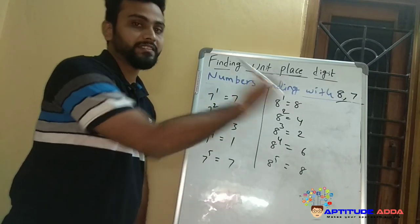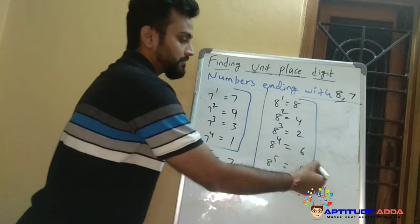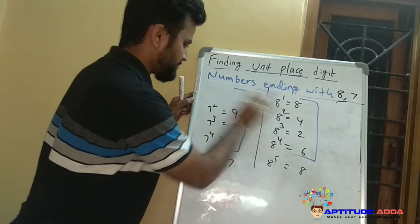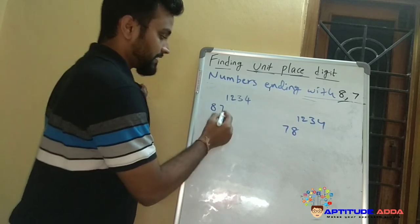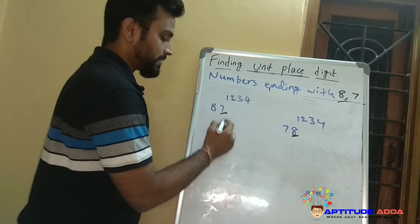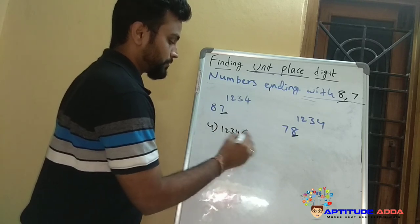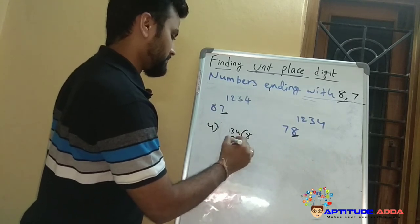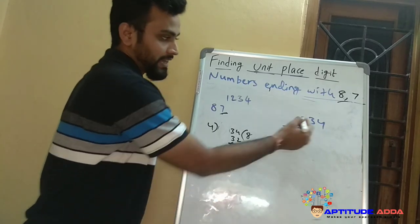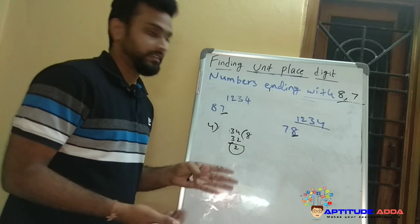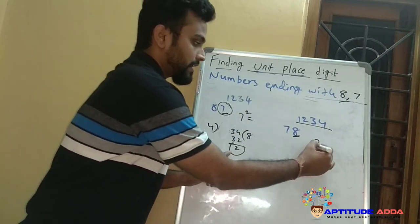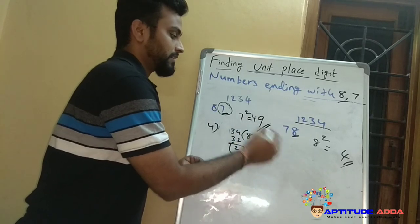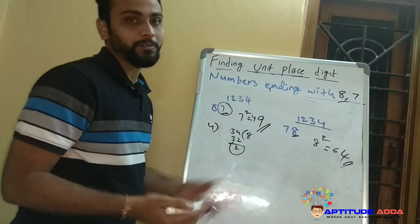Similarly for numbers ending with 7 or 8, for every four powers the cycle repeats. So divide the power by 4 and use the remainder. For a number ending with 7 and a number ending with 8, divide the last two digits of the power by 4. Here the remainder is 2 in both cases. So we find 7^2 = 49 → unit digit 9, and 8^2 = 64 → unit digit 4. Answers are 9 and 4.